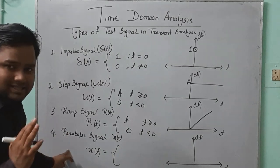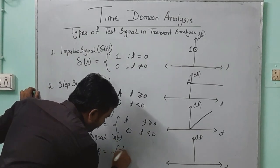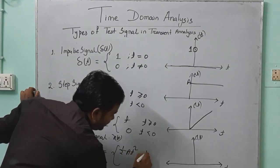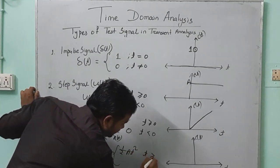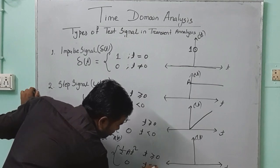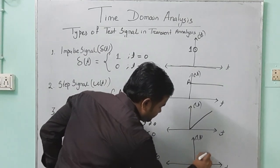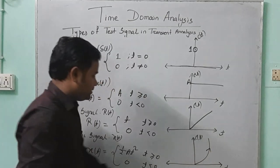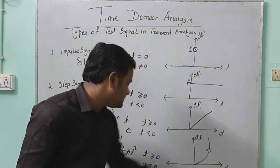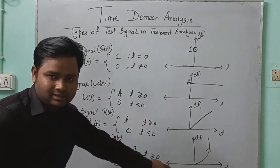The last signal is the parabolic signal. Its formula is half A T squared when T is greater than or equal to 0, and 0 when T is less than 0. Its graph is a parabolic curve for T greater than or equal to 0, and 0 for negative T.